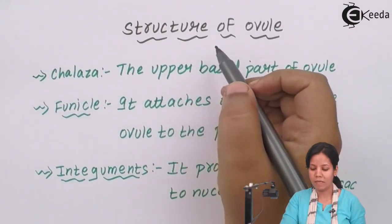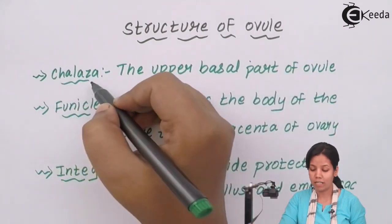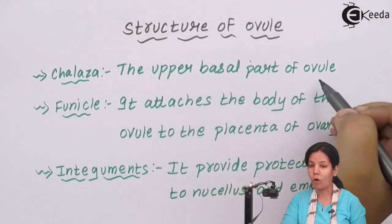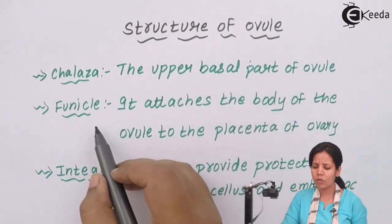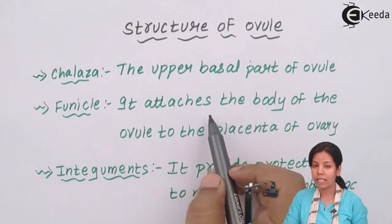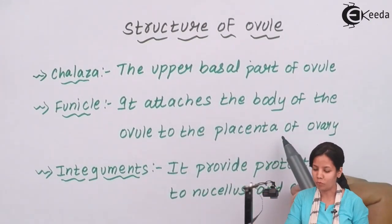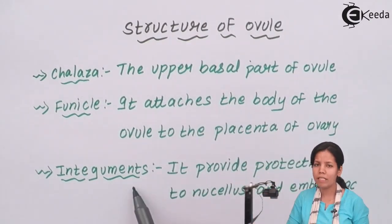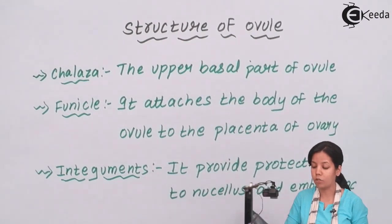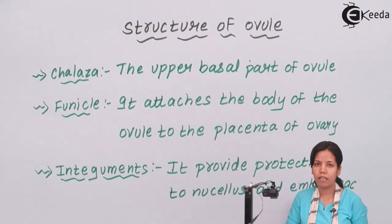Structure of ovule: ovule basically consists of chalaza, the upper basal part of an ovule. It consists of funicle, this funicle attaches the body of ovule to the placenta of the ovary. Integuments are layers present in the ovule which provide protection to the nucellus as well as to the embryo sac during and after fertilization.